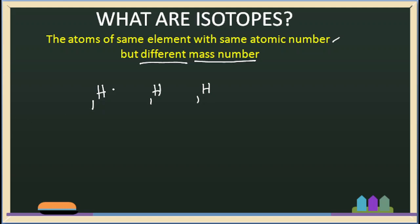If you have hydrogen, it can have a mass of 1, a mass of 2, a mass of 3, 4, 5, or 6 — you can also identify those.